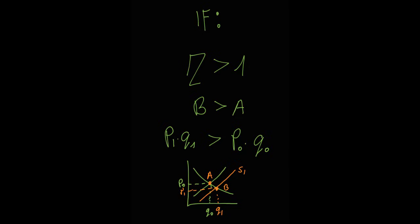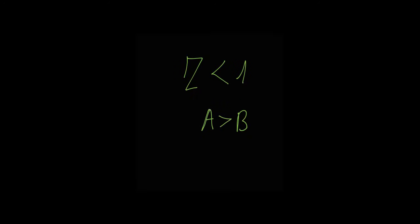And this chart says it all. For those stretchy products with elastic demand, our total spending actually goes up. The increase in how much we buy is just massive. But for those rigid, inelastic goods, look at that. Our total spending actually decreases.